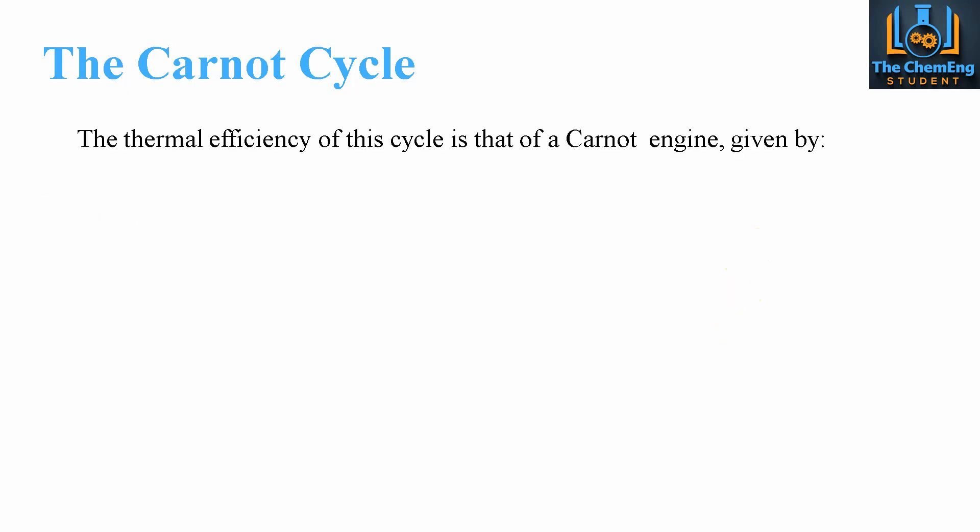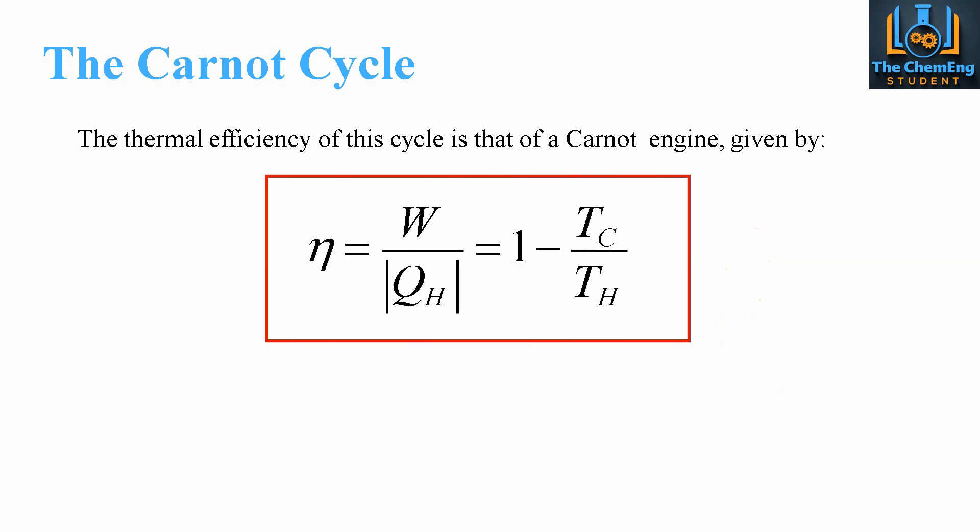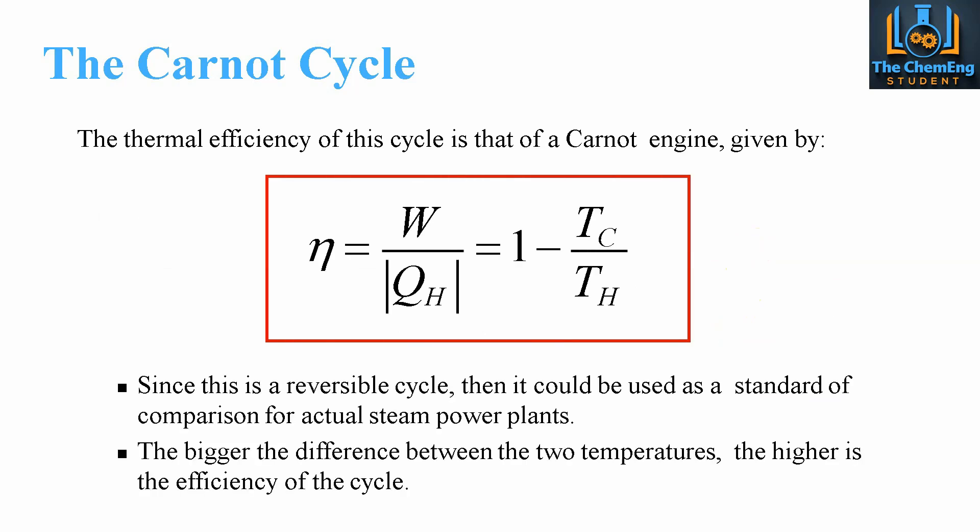The thermal efficiency of the Carnot engine is given by the formula we've seen. Since this cycle is reversible, it can be used as a standard of comparison for actual steam power plants. The bigger the difference between the two temperatures, the higher the efficiency, because the ultimate driving force for heat transfer is a temperature difference — a greater temperature gradient gives higher efficiency.